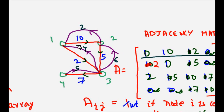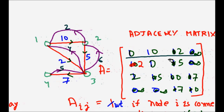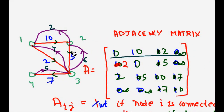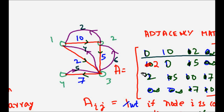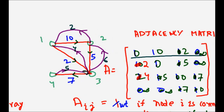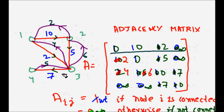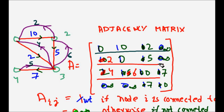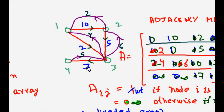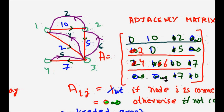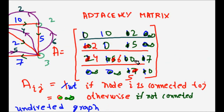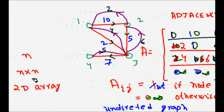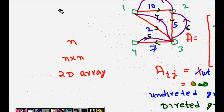Continuing the directed graph matrix: [3,1] = 4, [3,2] = 6, [3,3] = 0, [3,4] = 7. For node 4: [4,1] = infinity, [4,2] = infinity, [4,3] = 5 (this direction), [4,4] = 0. This completes the adjacency matrix for a directed weighted graph.